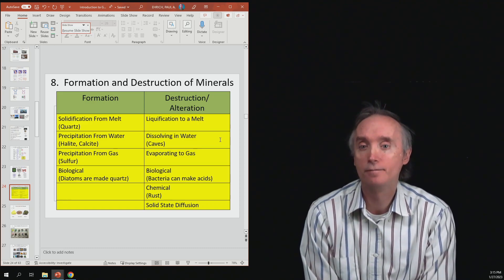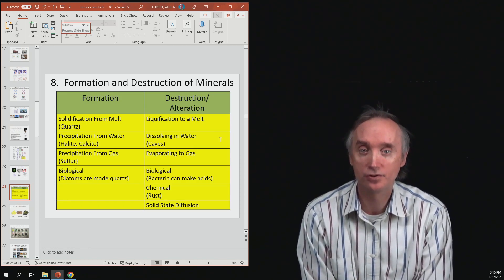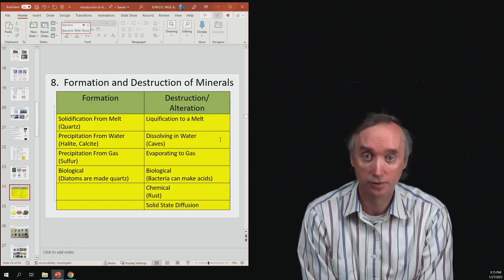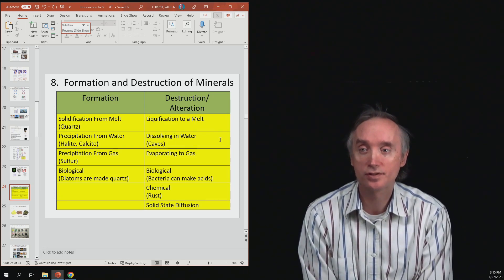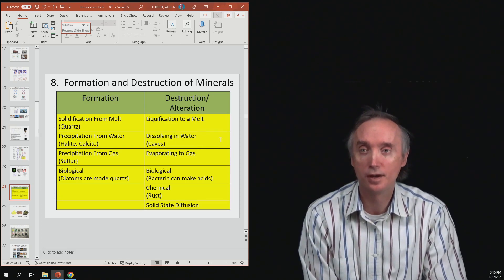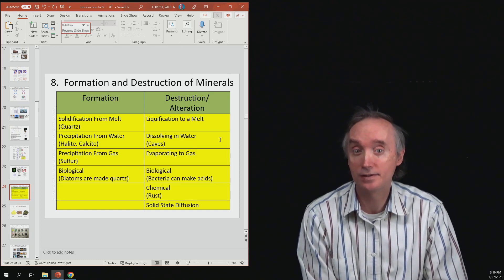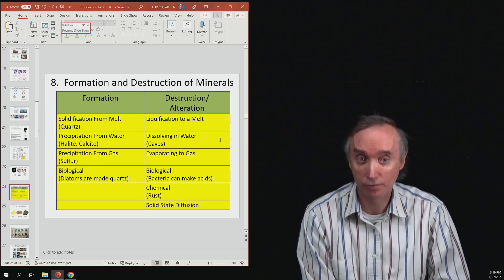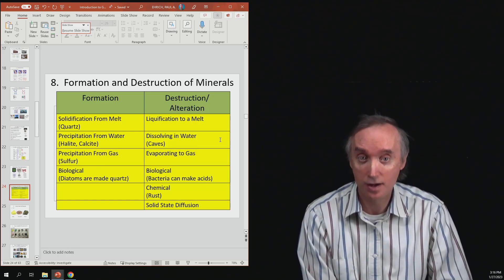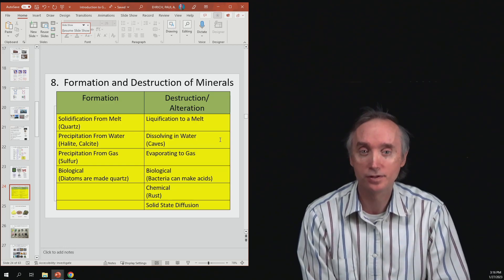You can also have biological activity can destroy a mineral. So, there are certain kinds of bacteria that, just as a natural metabolic process, they make acids, and they can actually dissolve the minerals that are in a rock, and some of these bacteria actually eat that material.